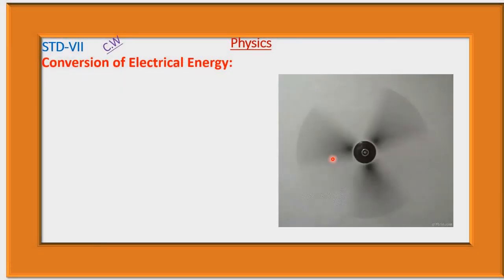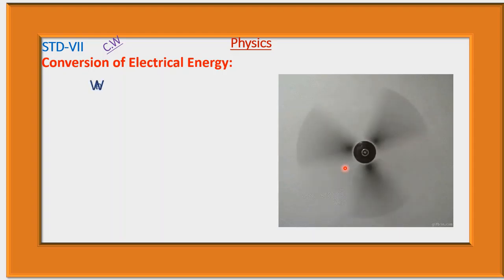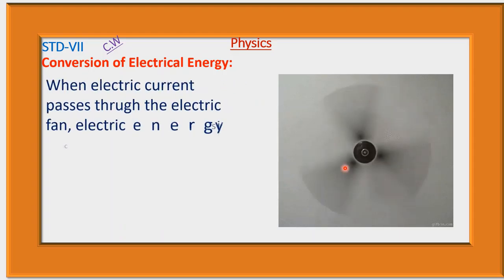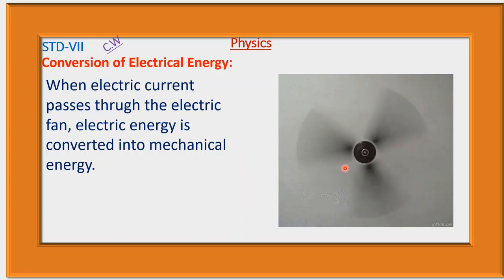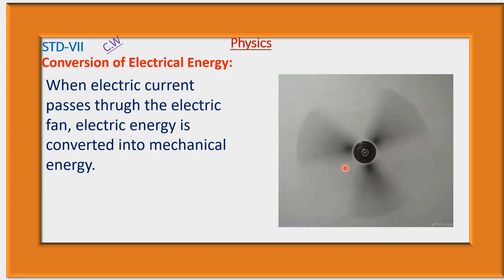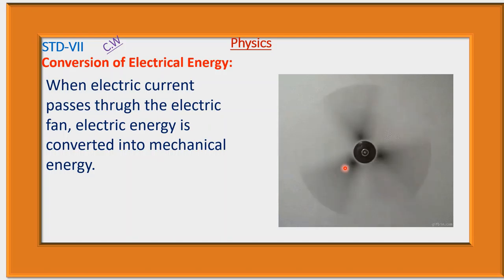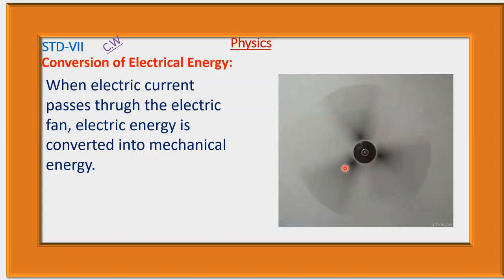Here is a moving fan — the blades are rotating. When electric current passes through the electric fan, electrical energy is converted into mechanical energy. Also, electrical energy is converted into thermal energy and light energy. Additionally, electrical energy is converted into chemical energy in the case of a rechargeable battery — when we charge the battery, electrical energy is converted into chemical energy, and when we use the battery, chemical energy is converted back into electrical energy.